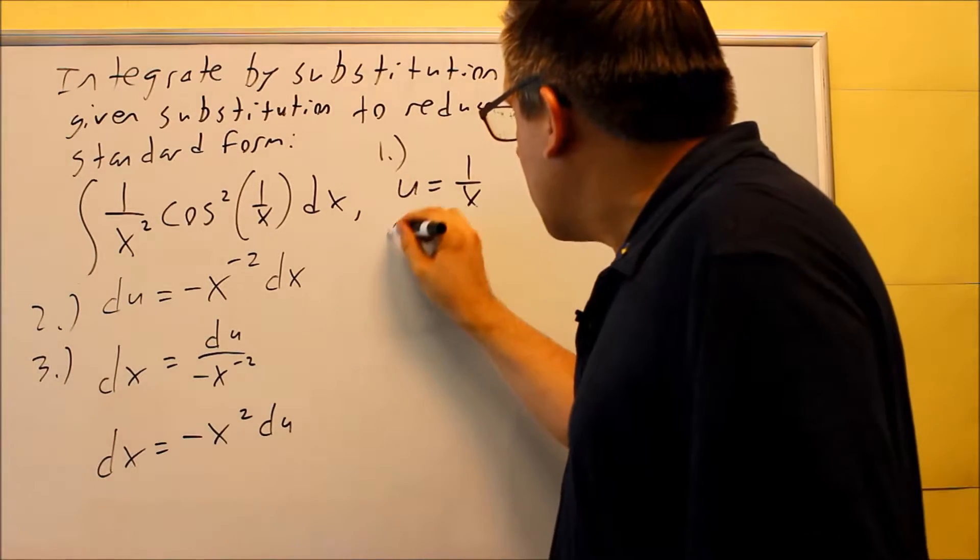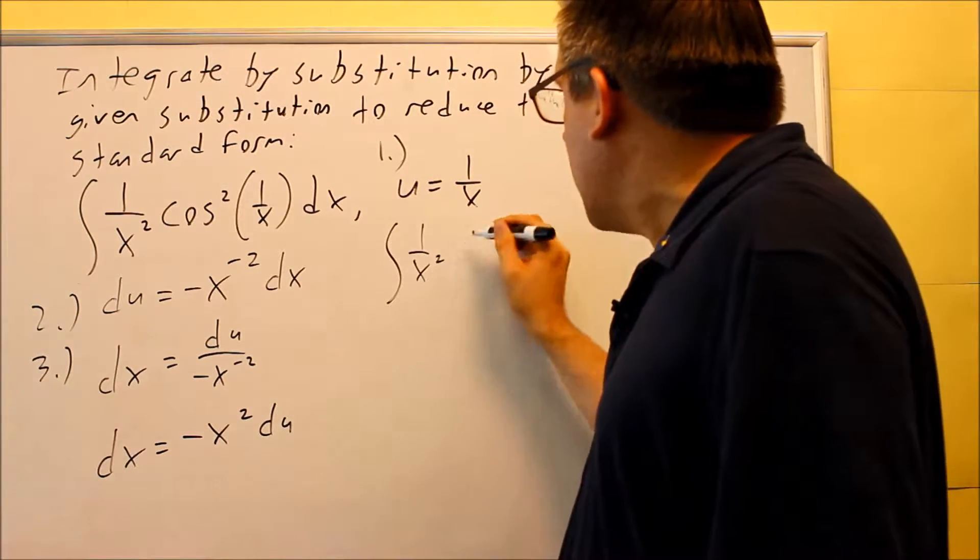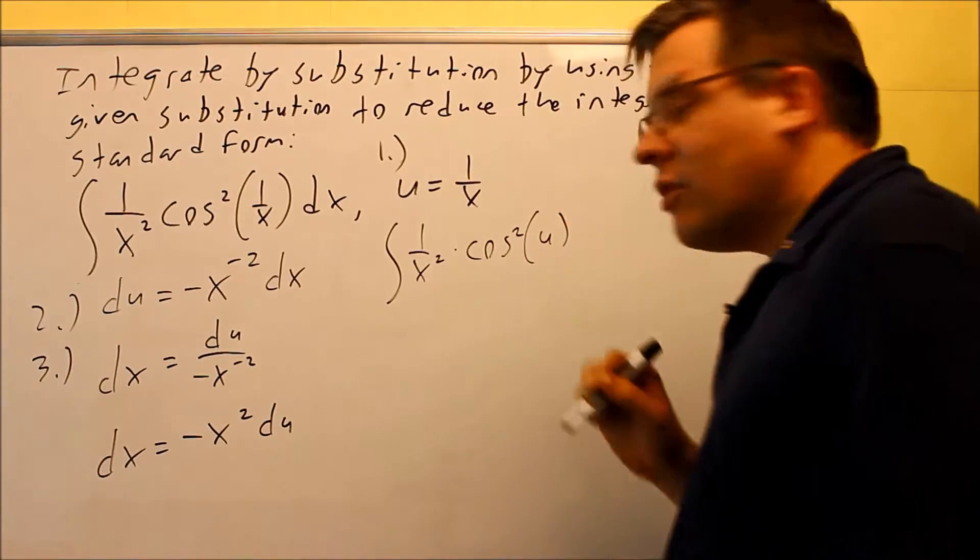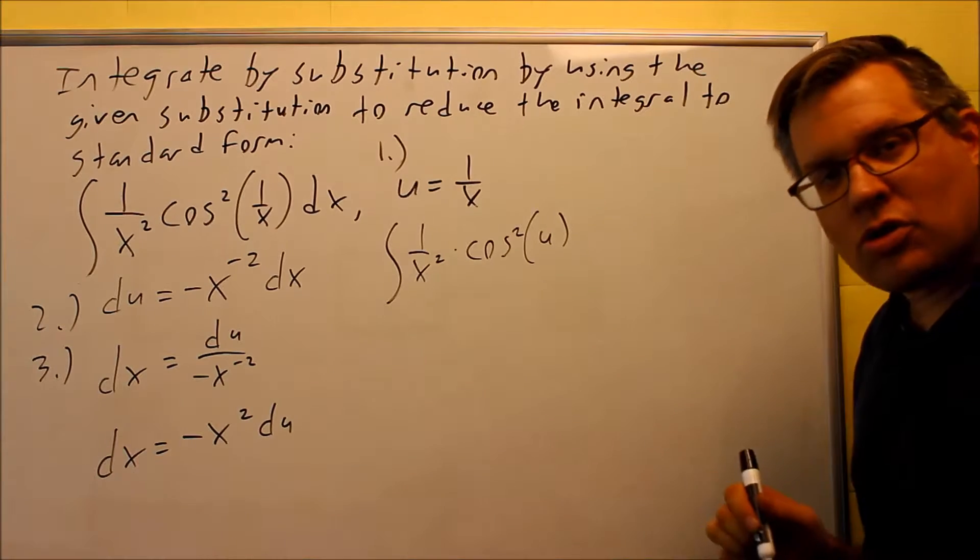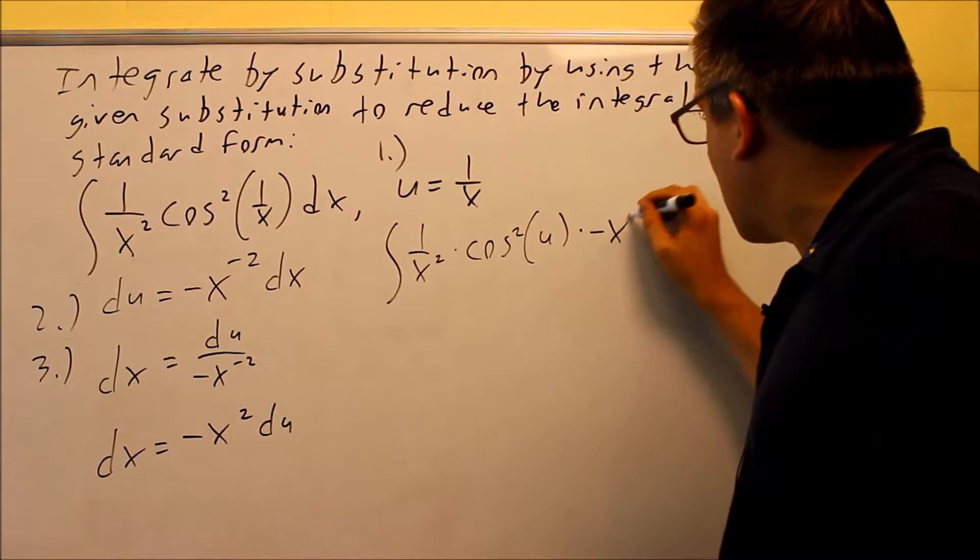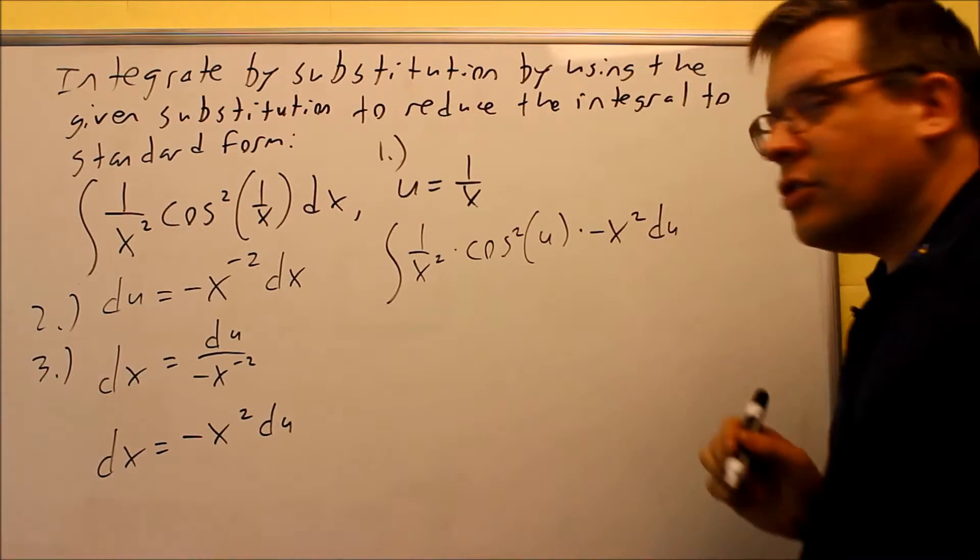So we're still on step 3. We're going to substitute this in, 1 over x squared. We're going to replace the 1 over x and put a u in for that one, so we're doing that substitution also. And then we substitute the dx, we'll put this in there, negative x squared du.